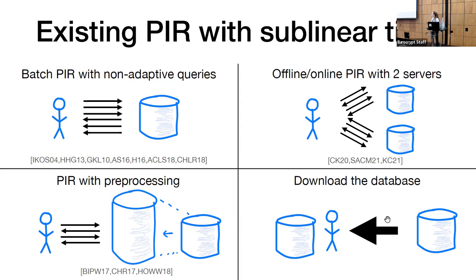A second approach is what we call offline-online PIR. In these schemes, the client first communicates with a server in an offline phase, which requires linear server time. But thereafter, the client can make many queries communicating with two servers in an online phase, which requires only sublinear server time. So again, amortized over many queries, the server work per query is sublinear in the database size.